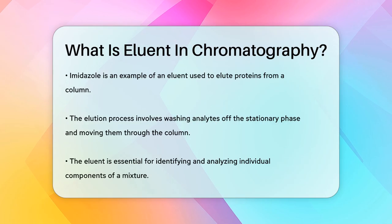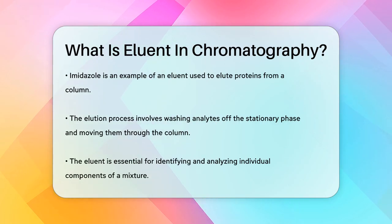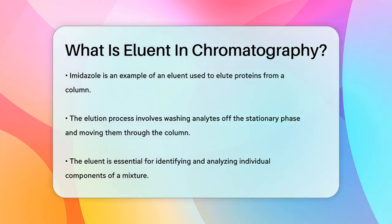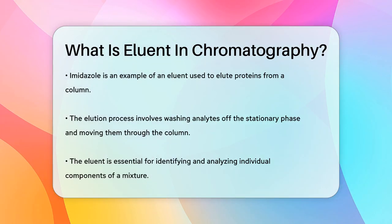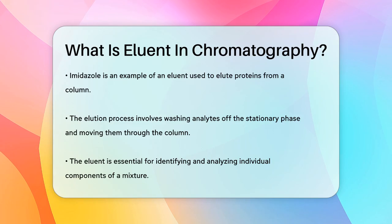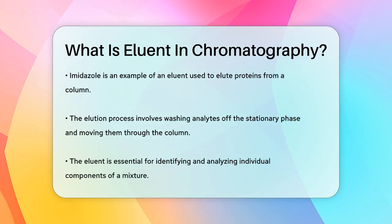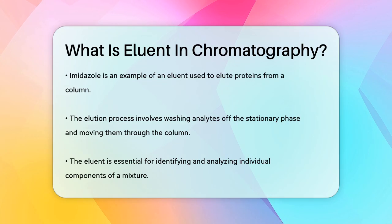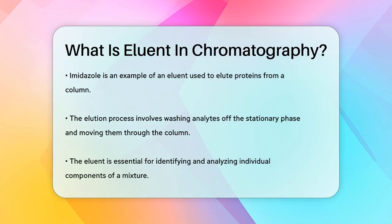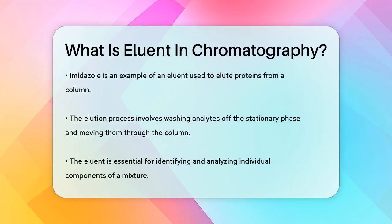This process is called elution, and it's how you get the separated components out of the column for analysis. So, in essence, the eluent is the mobile phase that makes chromatography work by separating and moving the components of a mixture, allowing you to identify and analyze each one individually.